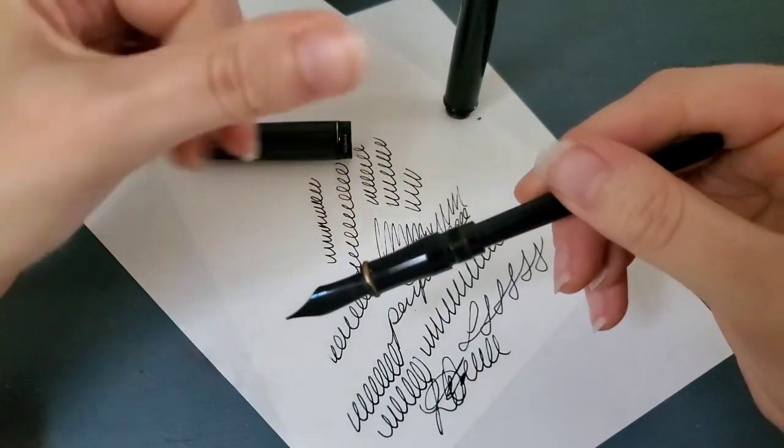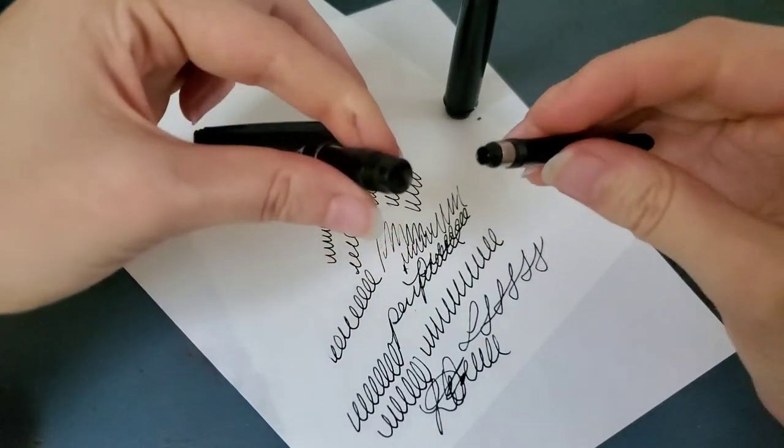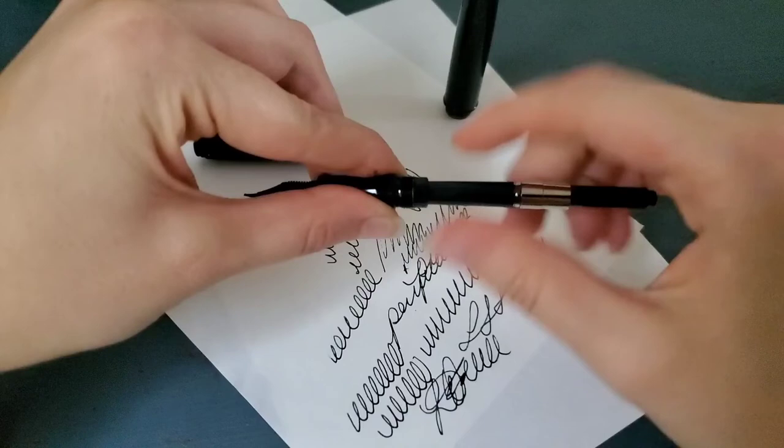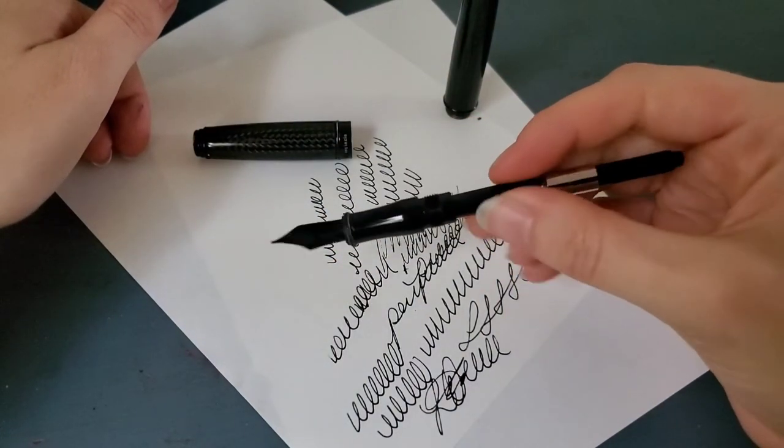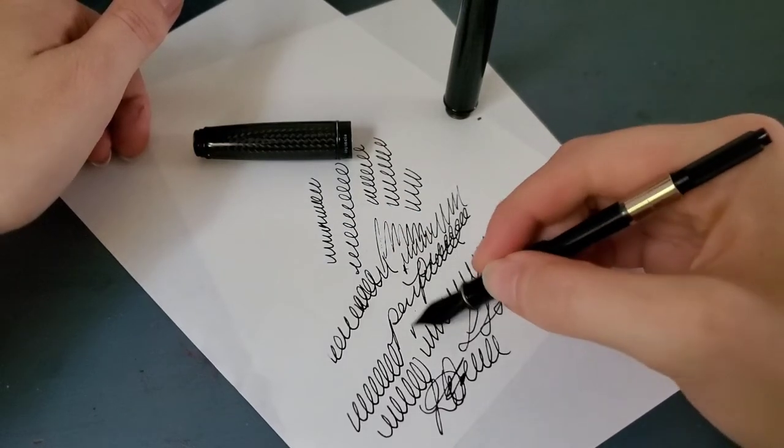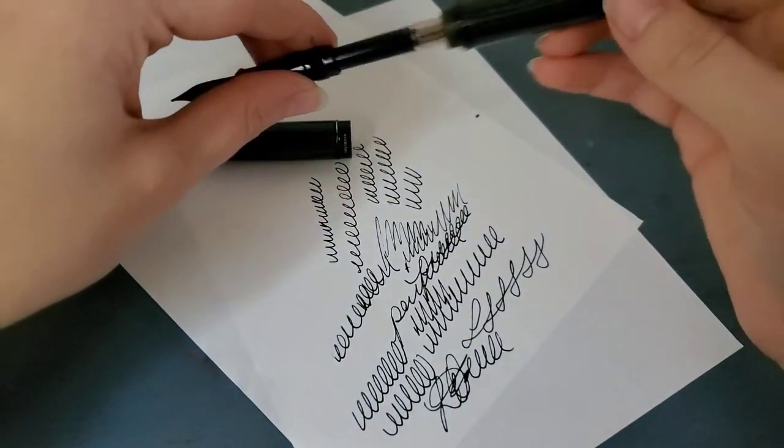But when I would notice, finally figured out the whole air pocket thing. So, if that happened where the ink wouldn't flow, I would just take the cartridge off, cartridge converter, whatever I was using, and hit it against something a couple of times, and then the issue would go away. So, it was no big deal.